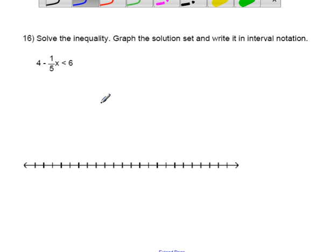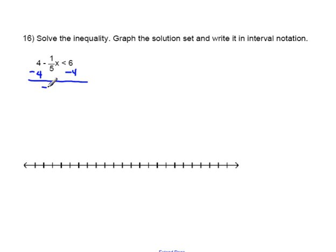We'll begin by solving the inequality, graph the solution set, and then write the answer in interval notation. So to solve the inequality, this is where you need to keep the variable on the left hand side. We're going to get rid of the 4 by subtracting it, bring down the negative one-fifth, bring down the less than, 6 minus 4 is 2.